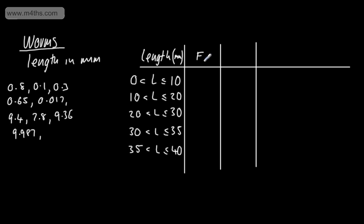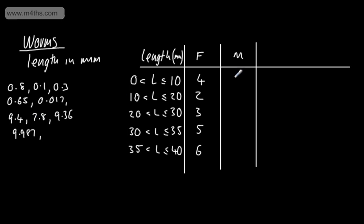What we can see is that many different worms go into each category. We need a reference point to give each group a value, and that's what we're going to look at. The frequency column will have: 4 in the first group, 2 in the second, 3 in the third, 5 in the fourth, and 6 in the fifth. Our reference point will be the midpoint of each class interval. The midpoints are: 5, 15, 25, 32.5, and 37.5.